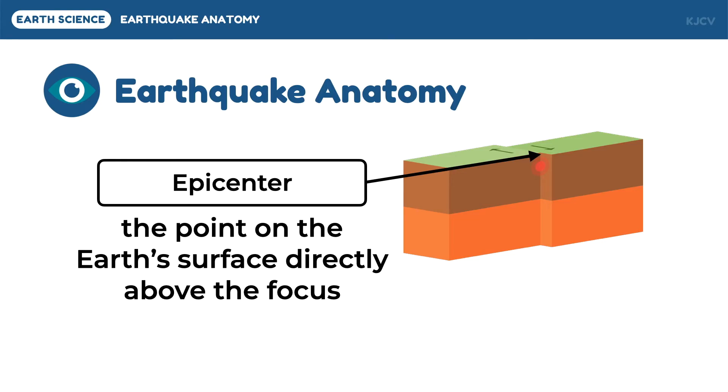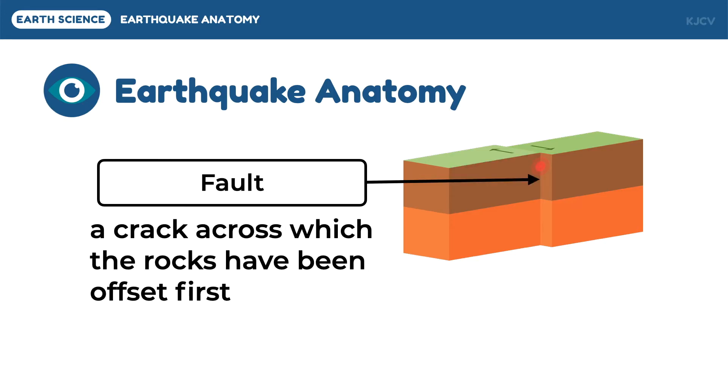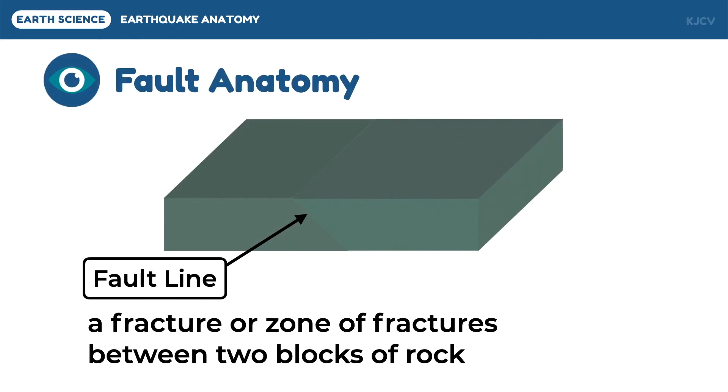The release of energy in the rocks will create a deformation on the rocks, which is also called the fault. This is a crack across which the rocks have been offset. First, the zones of fractures between the two blocks of rock will be moving depending on the type of force applied.